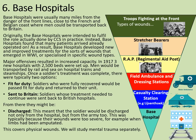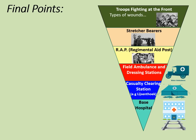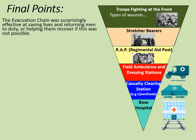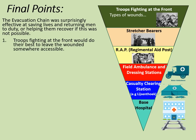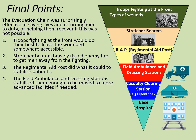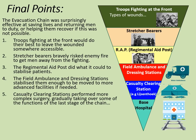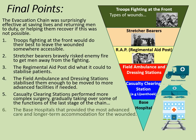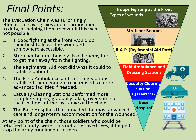This covers the physical wounds — we also have to study the mental trauma separately. The evacuation chain was surprisingly effective at saving lives and returning men to duty. Troops at the front left the wounded somewhere accessible; stretcher bearers bravely risked enemy fire to get men away from the fighting; the Regimental Aid Post stabilised patients; the field ambulance and dressing stations stabilised them enough to be moved to more advanced facilities; casualty clearing stations performed more complex surgery; and base hospitals provided the most advanced care and long-term accommodation. At any point, soldiers who could be returned to duty were — this not only saved lives but helped stop the army running out of men.